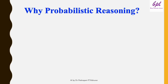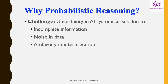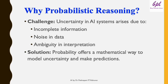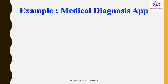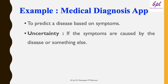Why probabilistic reasoning? AI systems, as amazing as they are, face a big challenge: uncertainty. These uncertainties in AI systems arise due to incomplete information, noise in data, and ambiguity in interpretation. The solution is probabilistic reasoning. Think about a medical diagnosis app that needs to predict whether you have a disease based on symptoms like fever or cough, but doesn't know for sure if those symptoms are caused by the disease or something else — this is where uncertainty comes in.